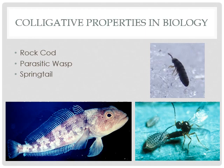The springtail does the same thing. The springtail is an insect that lives in melt ice in Antarctica. This melt ice is freezing cold, but they're able to survive it because they keep solutes going through their system so their system does not entirely freeze over.